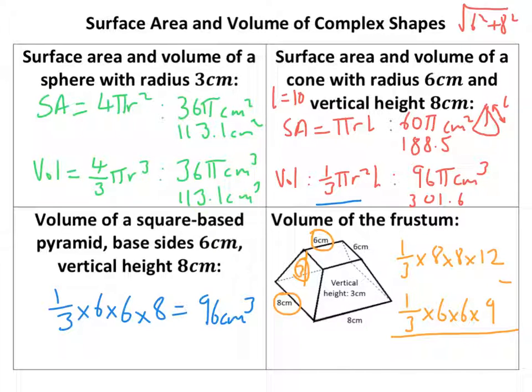Alright. So chuck that all in your calculator. So we've got 8 times 8 times 12 divided by 3 minus 6 times 6 times 9 divided by 3. And I end up with 148 centimeters cubed.